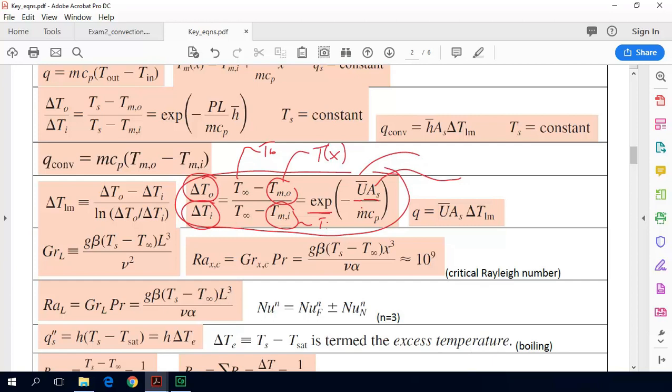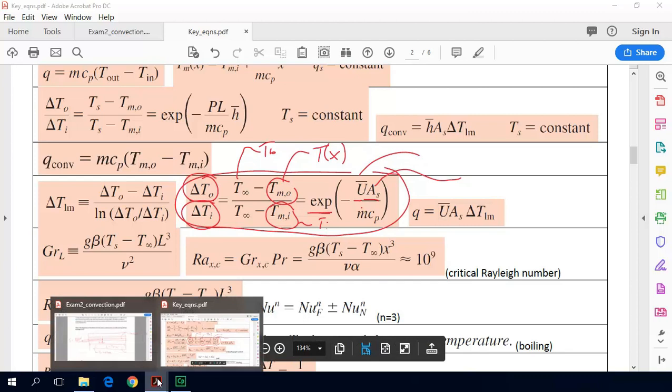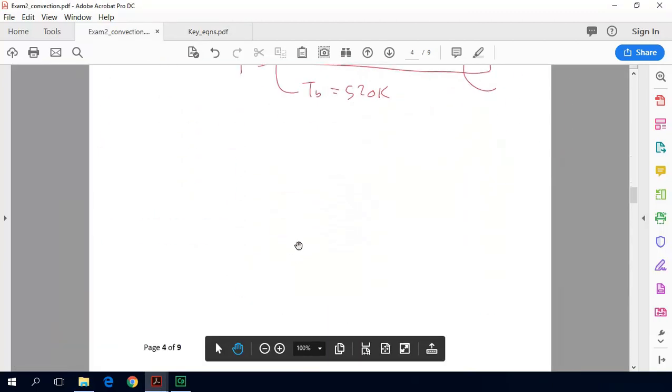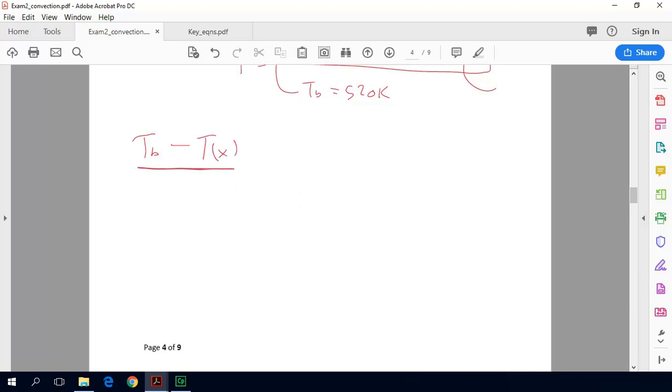So we'll use this basic form of the equation, and we'll just have to modify it to meet our problem. So when we come back to our problem, we can use that same form of the equation. We'll have our boiling water temperature minus our Tx. So this is the delta T at the outlet of the heat exchanger, which we're actually replacing with delta T measured at X, divided by the delta T at the inlet. So that's Tb minus Ti.